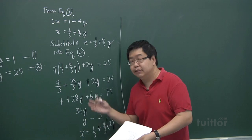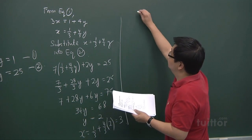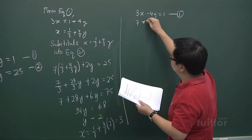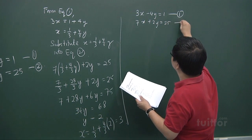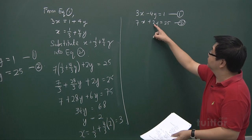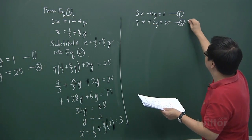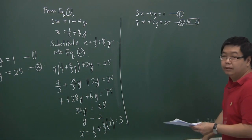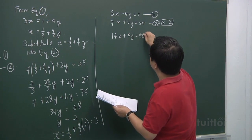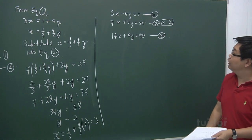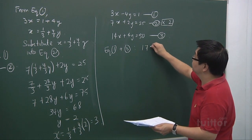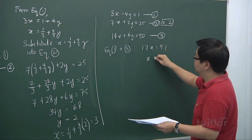Let me run through the elimination method to solve this problem. We have 3x minus 4y equals 1 as equation 1, and 7x plus 2y equals 25 as equation 2. An easy way to do elimination is to multiply the second equation by 2. So if you multiply by 2, you get 14x plus 4y equals 50 — let me call this equation 3. Using equation 1 plus equation 3, we get 17x equals 51, and x equals 3.